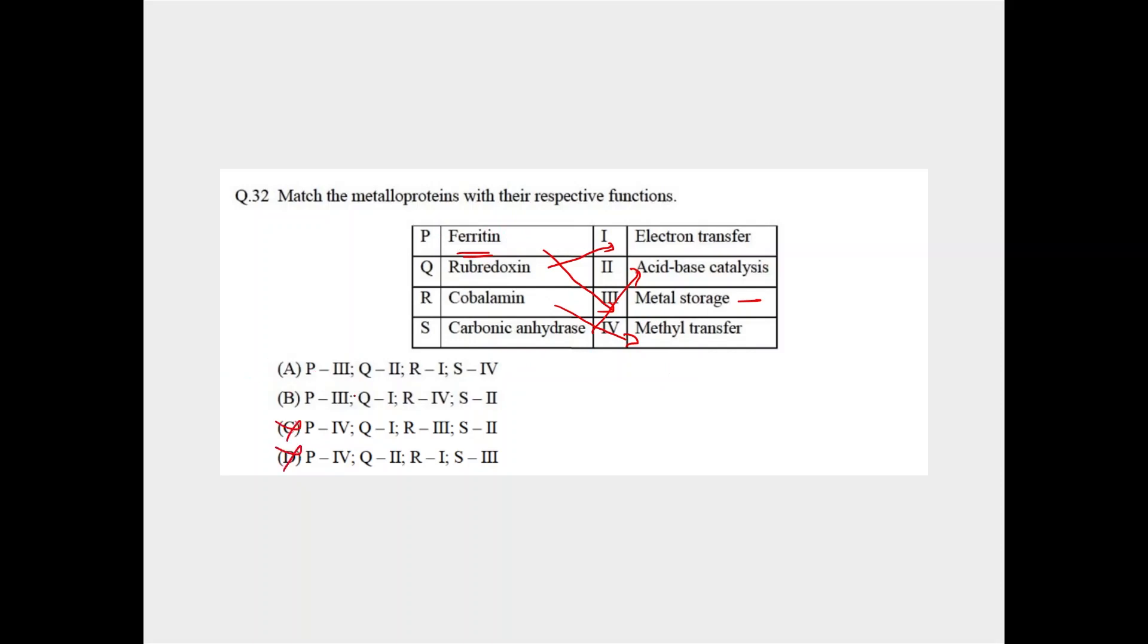Then Q2, rubridoxin, electron transfer, this is not the option, and here Q is 1, so electron transfer, this is correct. R, cobalamin 4, and carbonic anhydrase, S, acid-base catalysis, so S2. Therefore, option number B is the correct option for question number 32.